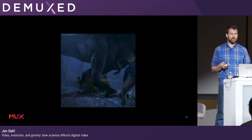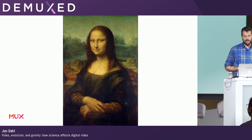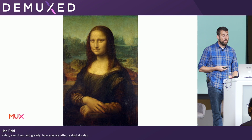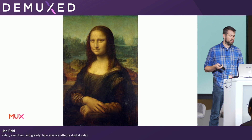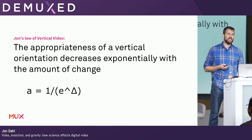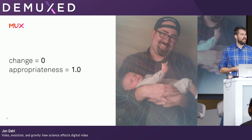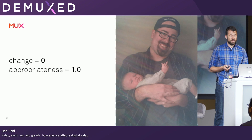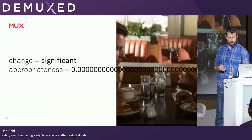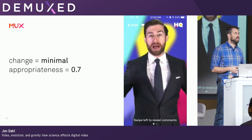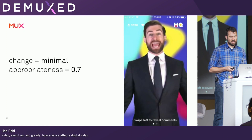Vertical video bad, horizontal video good. It must mean Leonardo is an idiot because he painted things up and down, right? Well, not exactly, because still images have a difference from video — the degree of change. There's no change in a still image, and there is change in a video. So I've come up with John's Law of Vertical Video, which says the appropriateness of a vertical orientation decreases exponentially with the amount of change. In formula form: A equals 1 divided by E raised to the power of the amount of change. A still image is perfectly appropriate in a vertical orientation. Something like a talking head has a little bit of change, but not too much — vertical might be okay for that. But a two-hour movie with a lot of change just makes no sense to be vertical.